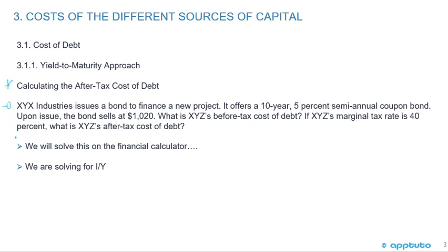XYZ Industries issues a bond to finance a new project. It offers a 10-year, 5% semi-annual coupon bond. Upon issue, the bond sells at $1,020, so it's sold at a premium. What is XYZ's before-tax cost of debt? If XYZ's marginal tax rate is 40%, what is XYZ's after-tax cost of debt? We're going to solve this on the financial calculator, solving for I/Y.